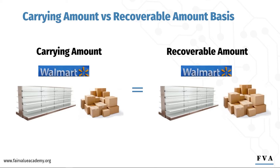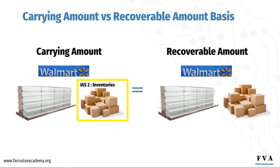Another point is that some assets and liabilities are included in the carrying amount, even though these assets and liabilities are not subject to impairment testing according to IAS 36. For example, inventory, which falls under IAS 2 inventories. Inventory is measured in accordance with IAS 2 and not IAS 36, but we include it in our carrying amount for equivalency reasons, because when generating the recoverable amount, we needed to take into account inventory's net working capital for free cash flow planning used for determination of the recoverable amount.